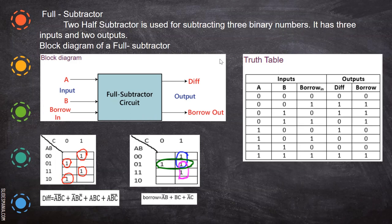In this video we are going to see the full subtractor. In the previous video we saw the half subtractor, where two bits are subtracted and the difference and borrow are shown. Here we are going to see how a borrow-in is handled — so three bits — and how we handle that third bit. For that we use a full subtractor circuit.